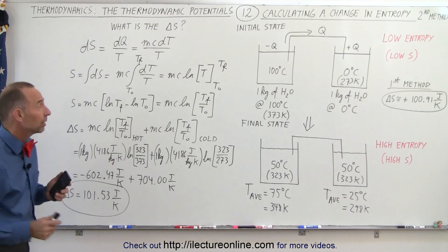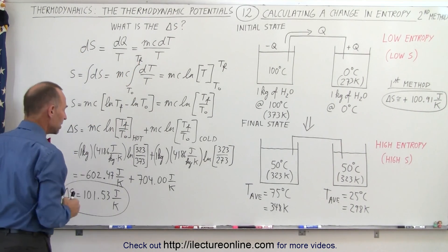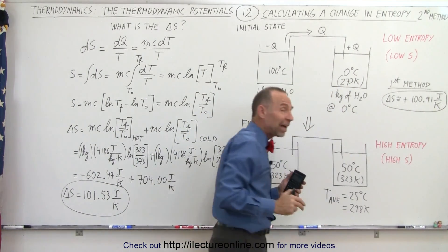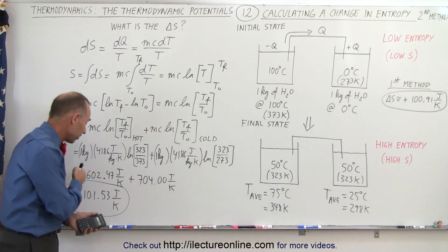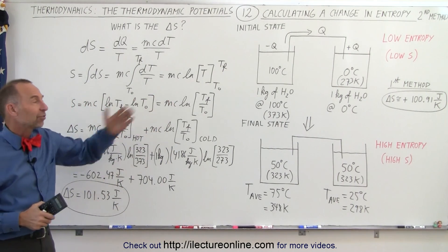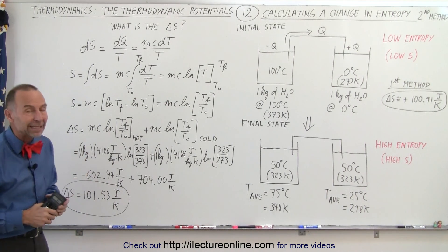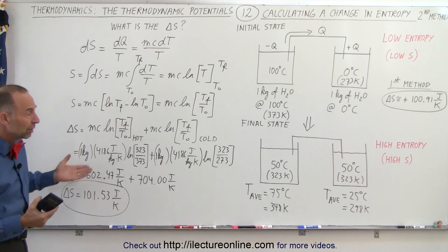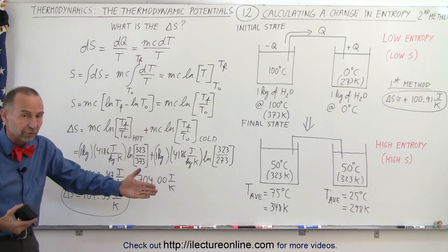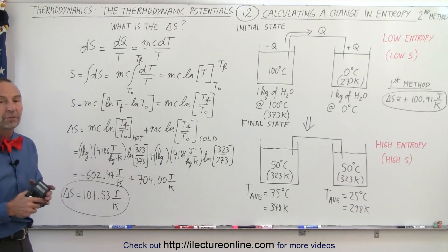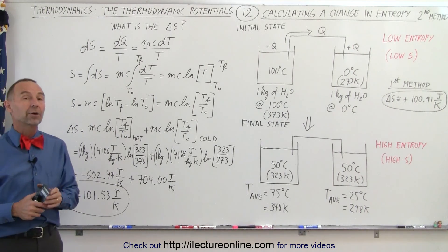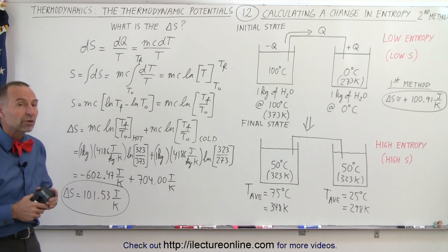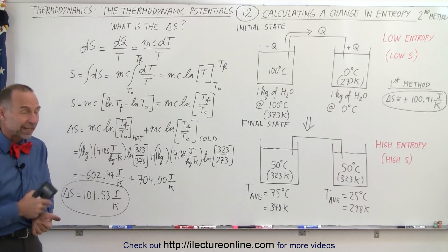This is the result we get by doing it more accurately — taking the integral of dT over T. Comparing it to the result using the average temperature, the difference is actually quite minor. The average-temperature method is a quicker way to calculate it, and either way you get roughly the same result. What we can see is that in every case, whenever heat is exchanged from a hot reservoir to a cold reservoir, entropy will always increase. That's the concept we'll now use to calculate the Gibbs free energy and the Helmholtz free energy when we discuss those two thermodynamic potentials.